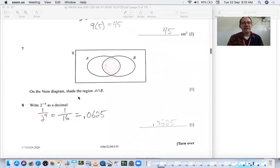On the Venn diagram, shade the region A intersect B. This is Venn diagram notation for intersection, where A intersects B. So you should shade in this little part right here in the middle.